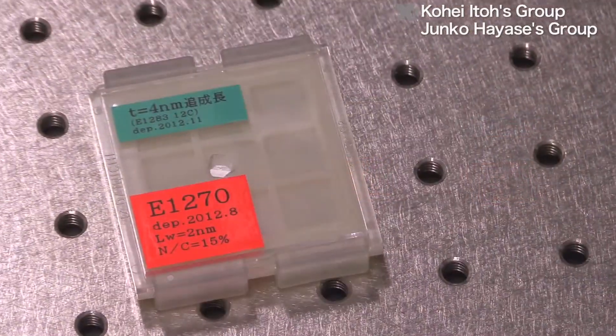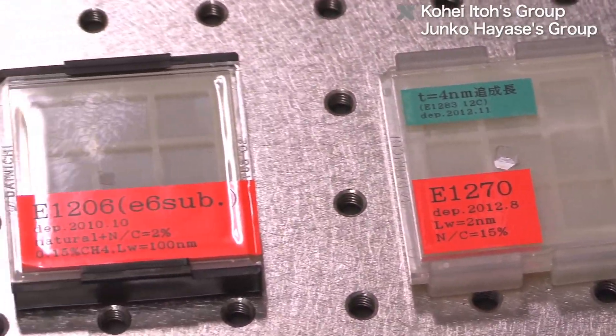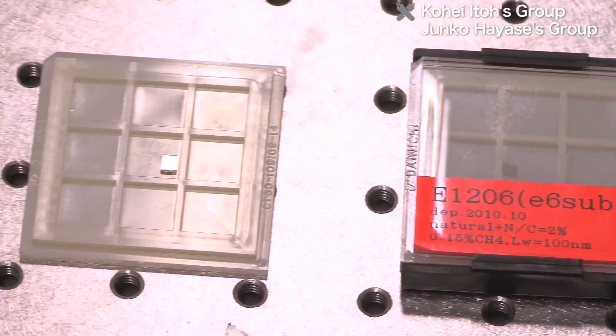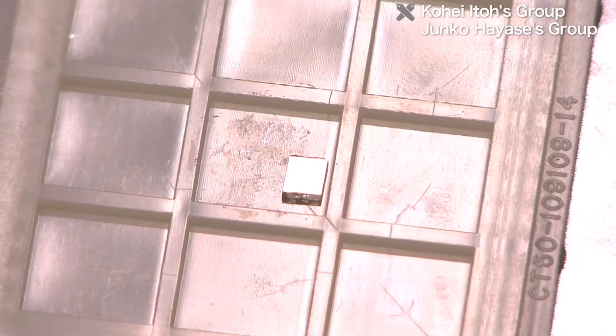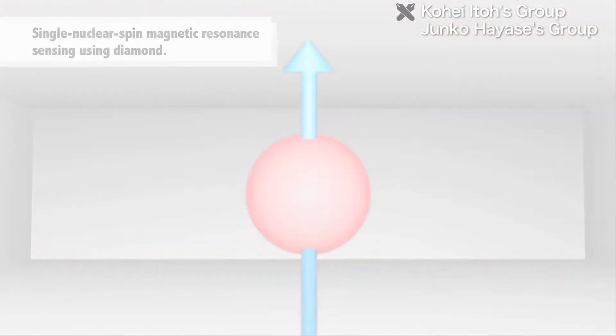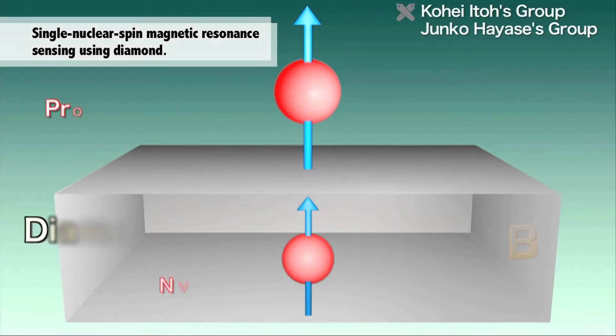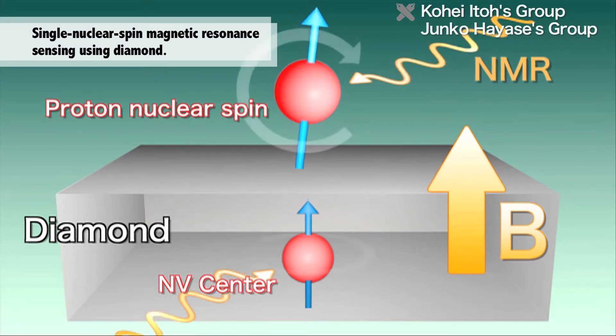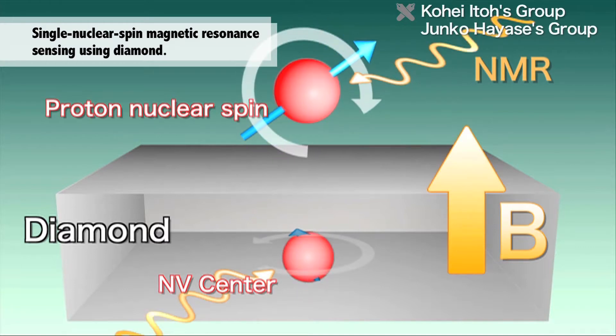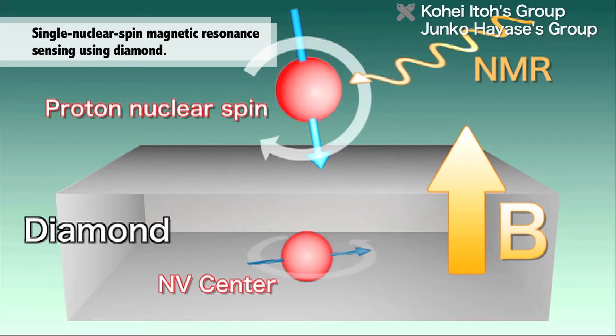If a hydrogen atom is placed on a diamond surface directly above an NV center, the magnetic field due to single proton nuclear spin can be measured using an electron nano compass. After establishing that state, the researchers apply an external magnetic field, which is necessary for proton nuclear magnetic resonance, and then use EM radiation with the resonance frequency to freely change the direction of the proton nuclear spin.